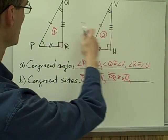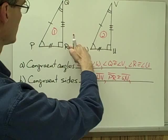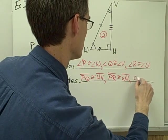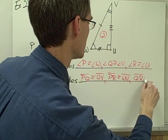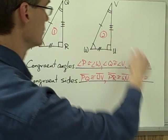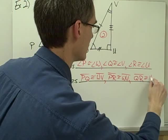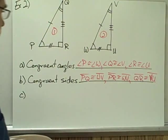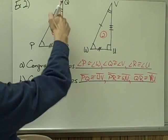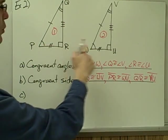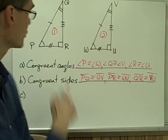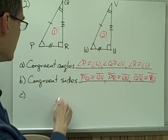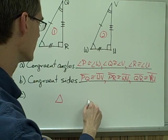My double hash marks — that's going to be PR and WU. So segment PR is congruent to segment WU. And my three hash marks — QR and VU. Segment QR is congruent to segment VU. So once again I have all three angles of triangle number one congruent to all three angles of triangle number two, all three sides of triangle number one congruent to all three sides of triangle number two. Now I can say that these two triangles are congruent.